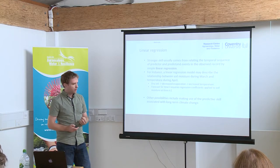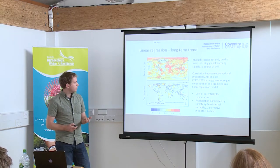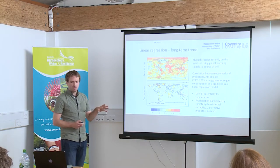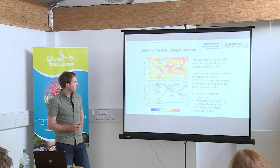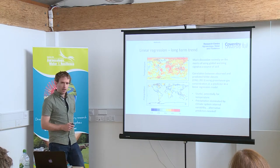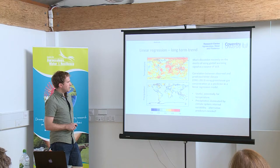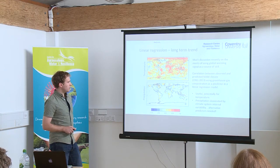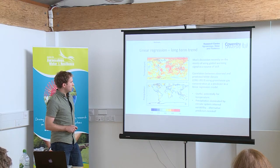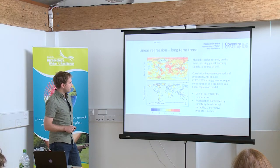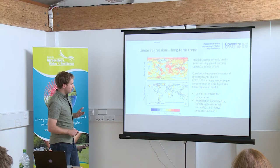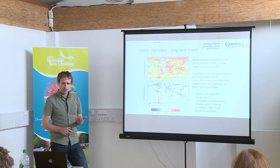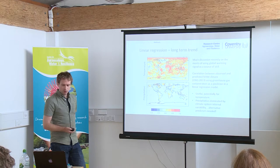One of these is making use of the long-term signal associated with global warming. There's been quite a lot of discussion on the merits of using a global warming signal as a source of skill in seasonal forecasting — something done in decadal forecasting and increasingly in seasonal forecasting. This shows correlations between observed and predicted March-April-May climate anomalies using greenhouse gas concentration as a predictor. In large parts of the world, particularly the tropics and Africa, the correlation is quite high for temperature, though there's not much skill for precipitation since it's dominated more by internal variability.